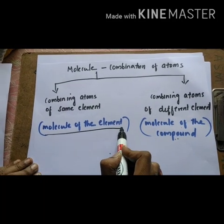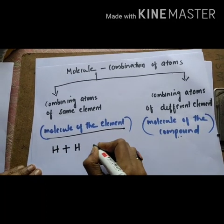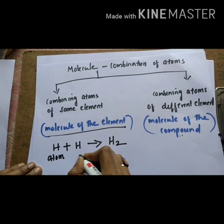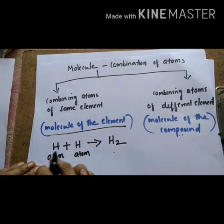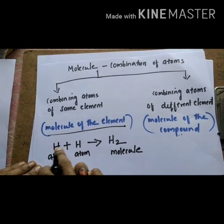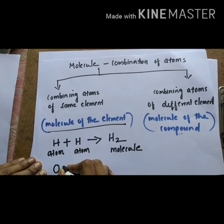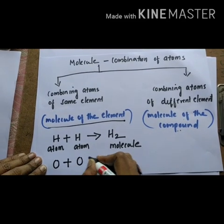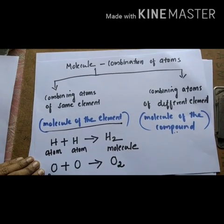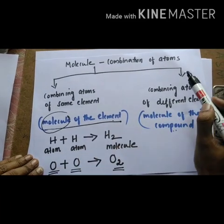Let us see this with an example. One Hydrogen atom combined with another Hydrogen atom to form the molecule H2. These two Hydrogen atoms combine to form the H2 molecule — this is atoms of the same element combining to form a molecule. One more example: one Oxygen atom combined with another Oxygen atom to form the Oxygen molecule O2. So, combining atoms of the same element gives you a molecule of the element.